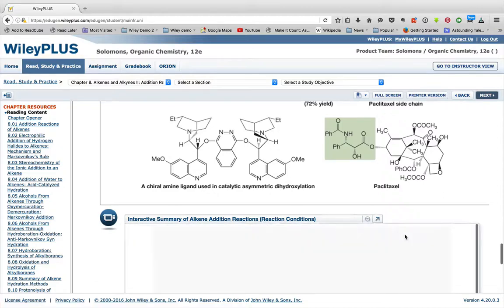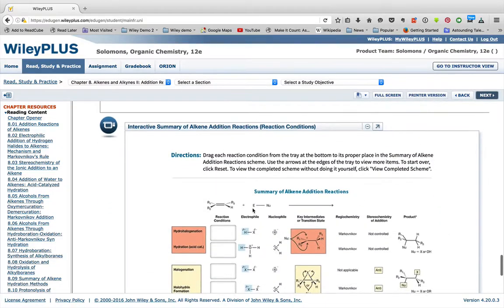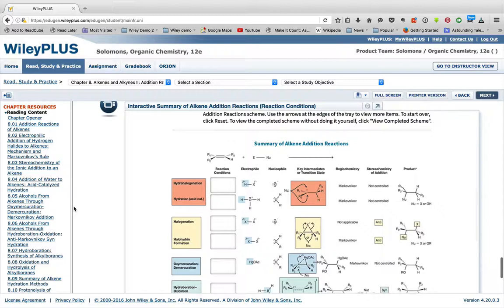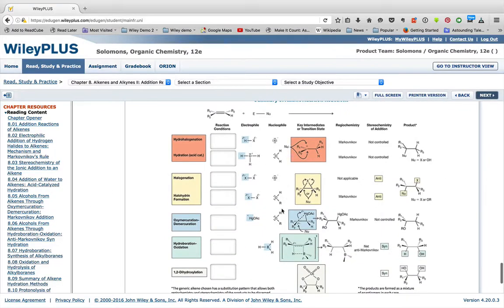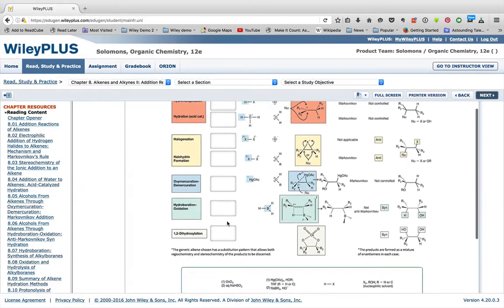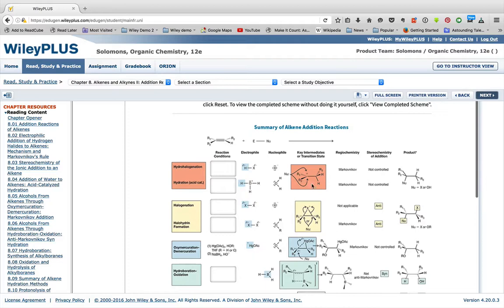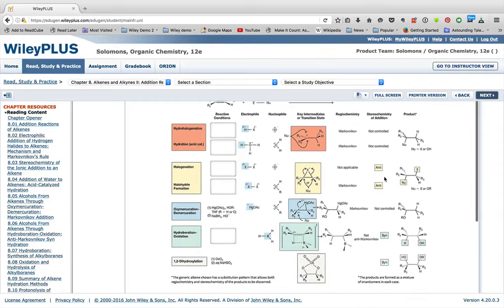We also have interactive concept maps all throughout the chapter. So here's an interactive concept map. It's empty right now or partially empty, and you can fill it in by dragging in the reagents into the appropriate place. So this is showing a reaction scheme, including the electrophile, nucleophile, regiochemistry, stereochemistry.